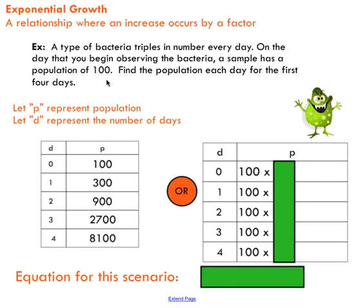On the day that you start looking at these bacteria, your sample has a population of 100. I'm going to let P represent your population and D represent the number of days. So at day zero, as soon as you start looking, you see that there's 100 of them.